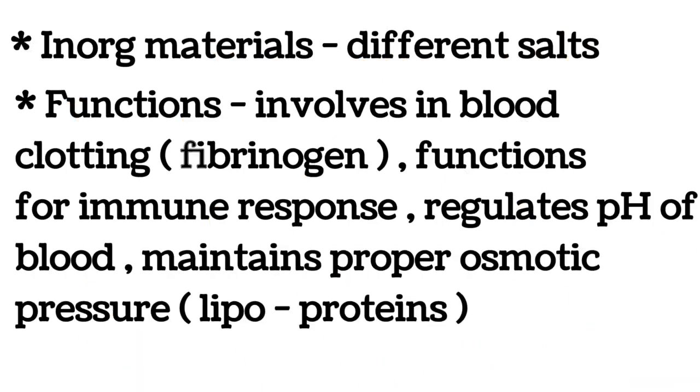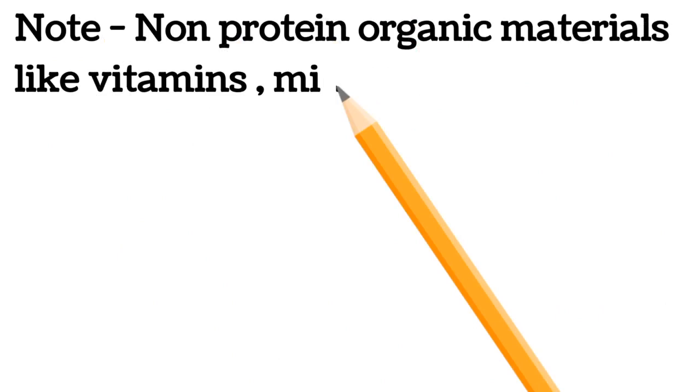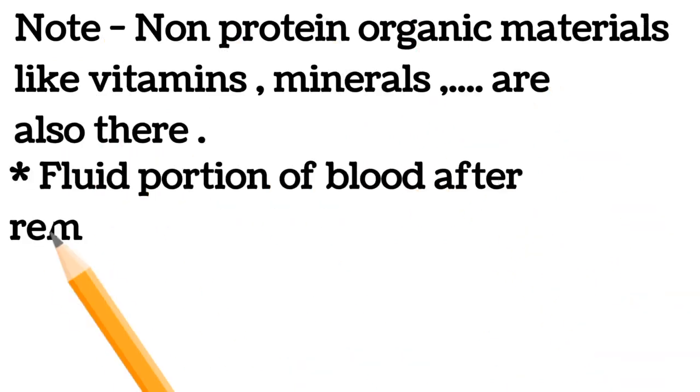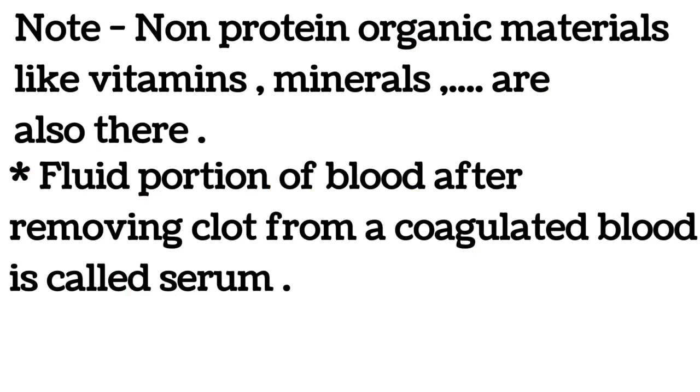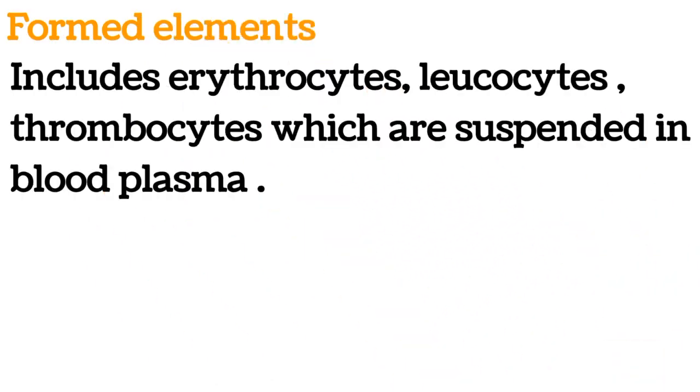Note: non-protein organic materials like vitamins, minerals are also there. Fluid portion of blood after removing clot from a coagulated blood is called serum. Formed elements include erythrocytes, leukocytes, thrombocytes which are suspended in blood plasma.